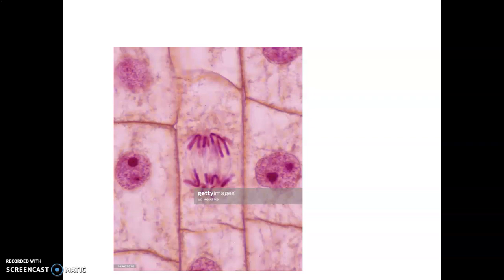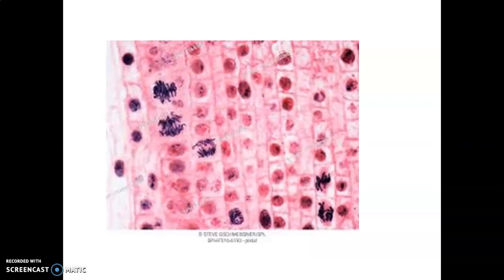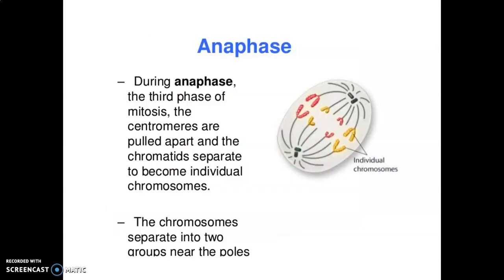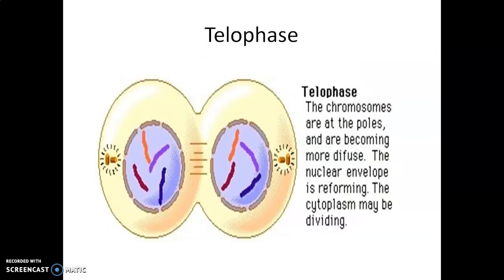Thus anaphase stage is characterized by centromere split and chromatids separate. Here you can see a lot of cells showing anaphase. Then chromatids move to opposite poles. See this is a diagrammatic representation.